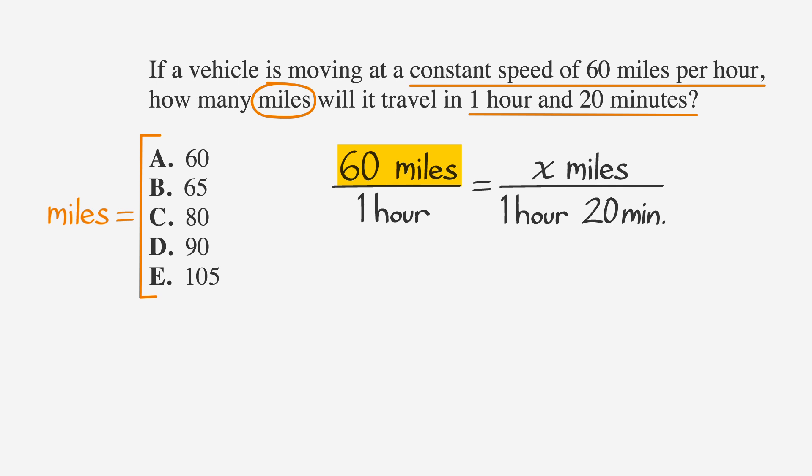Since we have miles in the numerator on the left-hand side of the equation, we need miles in the numerator on the right-hand side of the equation. We have miles across from each other in the numerators, but notice that the units of measure in our denominators don't match. Let's use minutes as our unit of measure in the denominator. That's the easiest thing to do. We know that 1 hour is 60 minutes, so 60 plus 20 is 80 minutes.